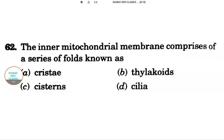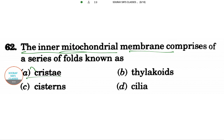Hello students, welcome to class. The question is about mitochondria: the inner mitochondrial membrane comprises a series of folds known as which of the following? The options are cristae, thylakoids, and cilia. The answer will be option A, that is cristae.